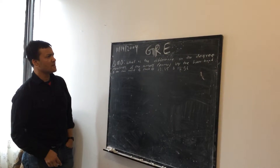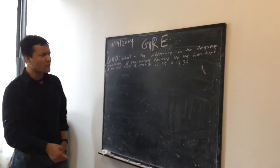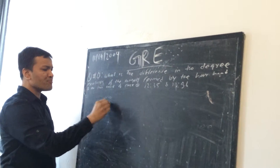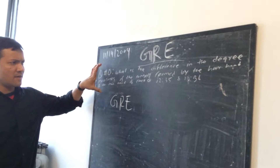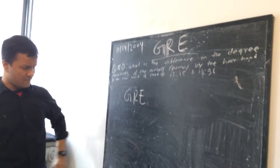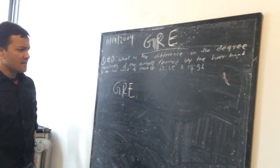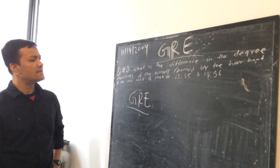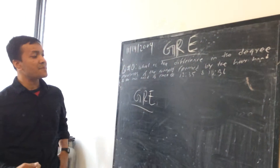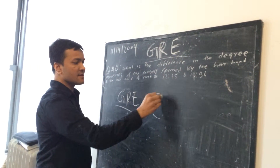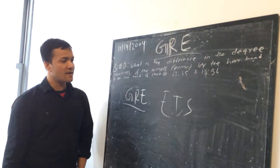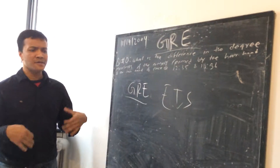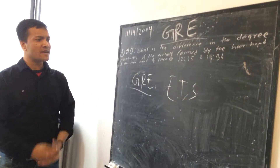Let's talk about GRE — what is GRE? GRE is an acronym that stands for Graduate Record Exam. Before I solve the math problem, I just want to talk a little about GRE. It is administered by ETS, Educational Testing Service, and is a standardized test required by almost all graduate schools in the United States.